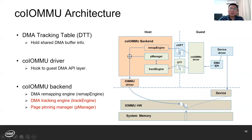Here is the architecture of CoLMMU. We introduce the DMA tracking table, the DTT, to hold the shared DMA buffer information. In the guest, we hook the CoLMMU driver to the guest DMA API. The CoLMMU driver intercepts the DMA API operations in the guest and updates the DTT accordingly. It will choose to notify the hypervisor for page pinning if the DMA buffer is not pinned yet. At the host side, there are three major components: the DMA remapping engine, the DMA tracking engine, and the page pinning manager.